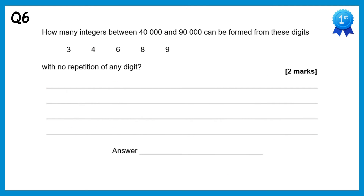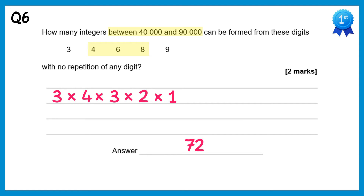For this question, we need numbers that are between 40,000 and 90,000, and there's no repetition of any digit. So if we're between these numbers, we must start with a 4, 6 or an 8, so there are three ways of selecting the first digit. Once we've selected one of those, there are five numbers altogether but one of them's gone, so there are 4 for the next digit, then 3, then 2, then 1 — remembering it must be a 5 digit number. If you do all of this, you'll get 72.